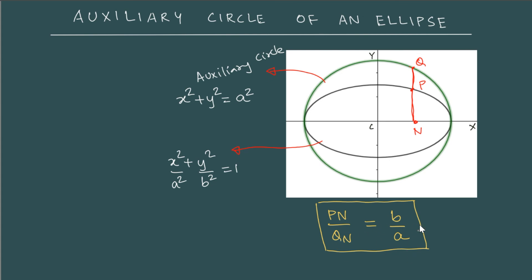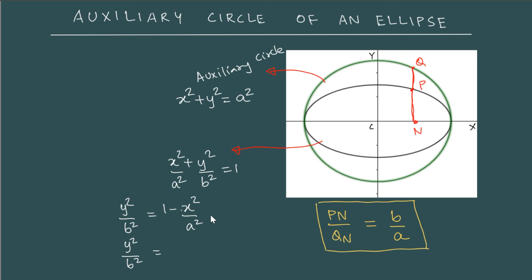Now, how do we know that this is right? What we can do is take a look at the equation of the ellipse and write it a little differently. The equation of the ellipse: I am trying to write y² / b² as 1 − x² / a². Here we can write y² / b² as (a² − x²) / a², which we can write as (a − x)(a + x) / a².